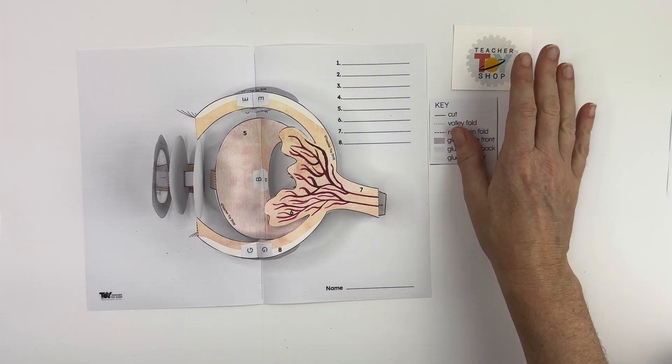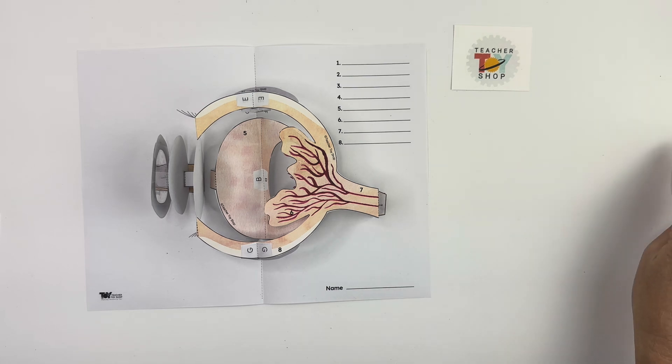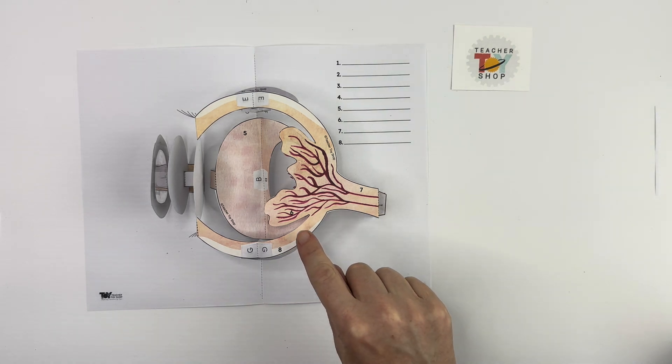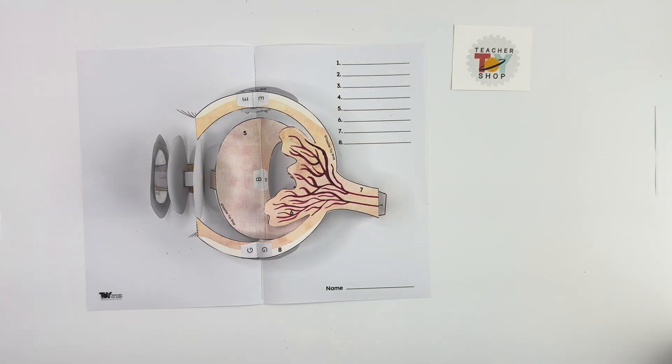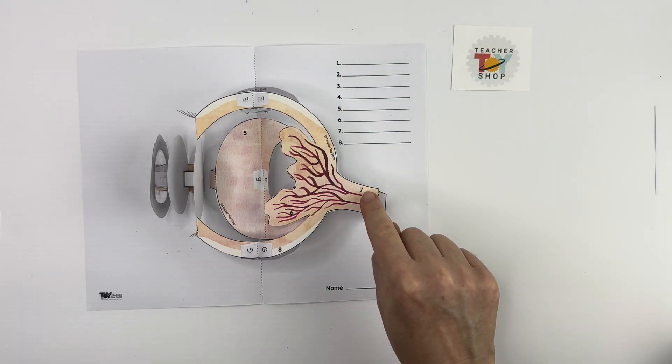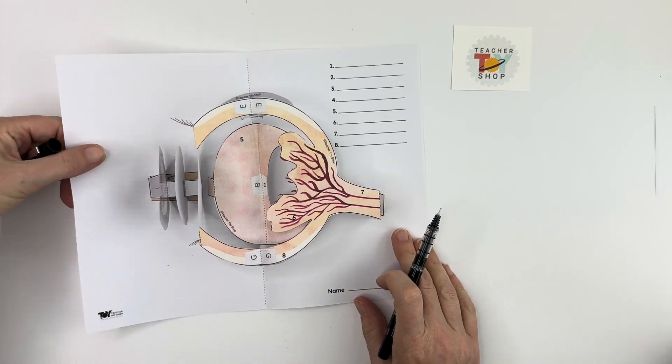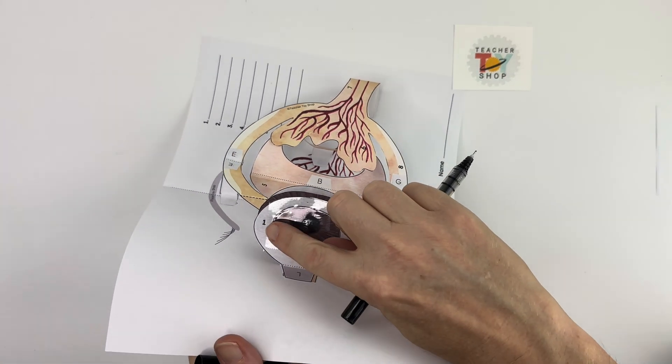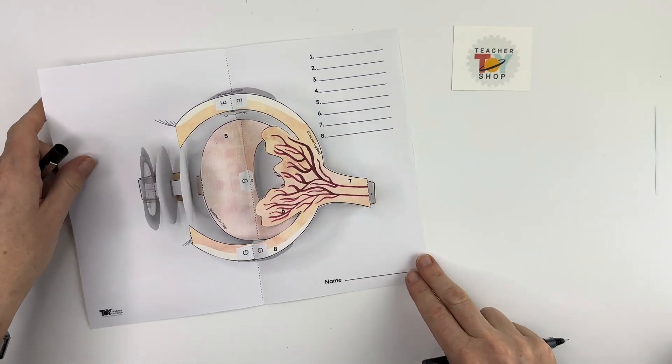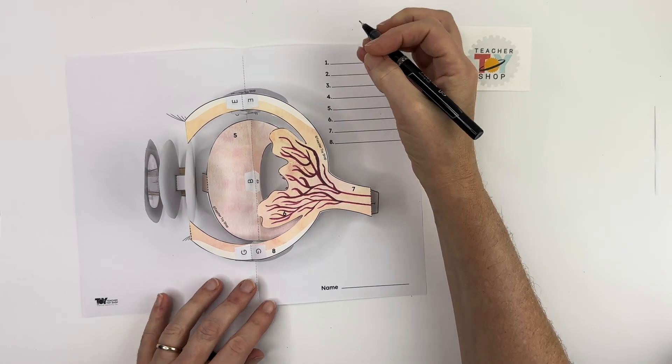And that is actually pretty much it. You've built the eye now and then what you can do is follow the instructions or excuse me look at the numbers and figure out what each eye part is and label it. For example, I've already told you that number one here is the cornea so you can go ahead and label cornea right there.